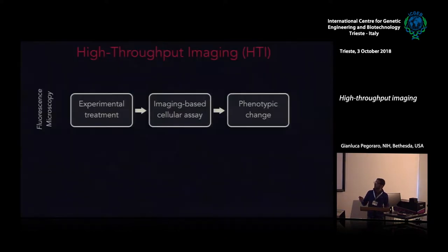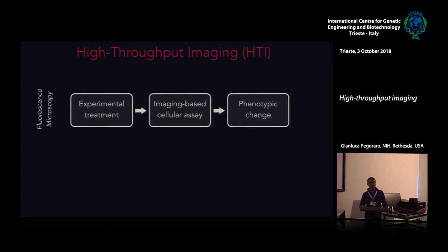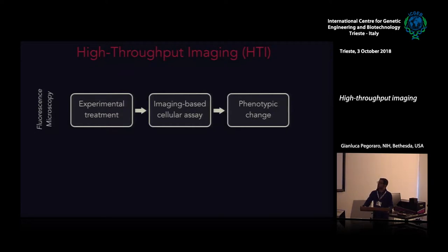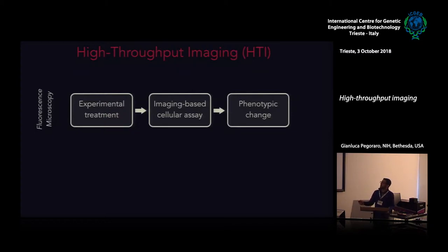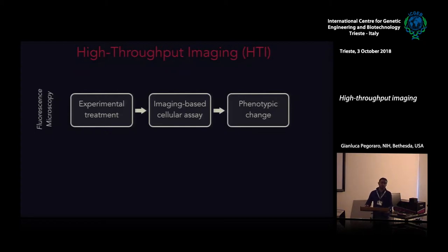High-throughput imaging, or HTI, sometimes known as high-content screening or high-content imaging, is a technique based on fluorescence microscopy. Much like more traditional fluorescence microscopy approaches, we have an imaging-based cellular assay based on the use of a microscope. We use this assay to test the effect of an experimental treatment by measuring phenotypic change.